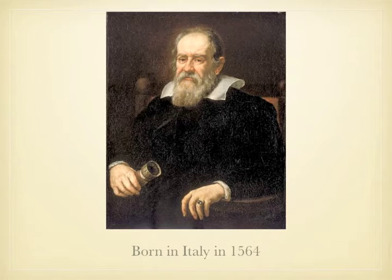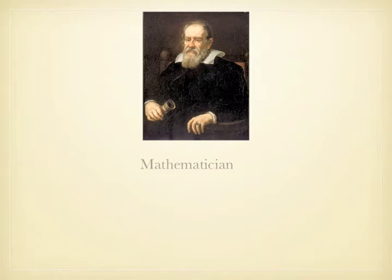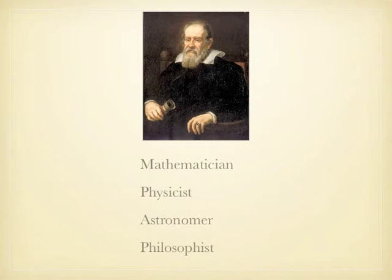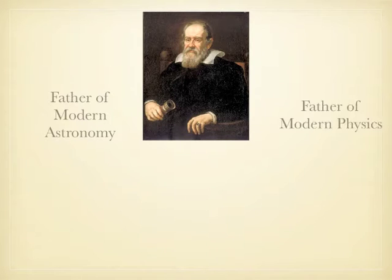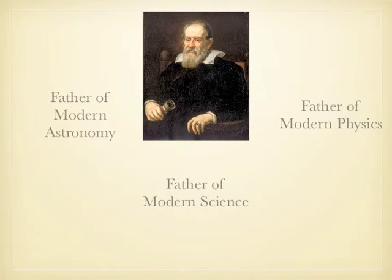Galileo Galilei, born in Italy in 1564, was a mathematician, a physicist, an astronomer and a philosopher. He was given many titles like father of modern astronomy, the father of modern physics, or just the father of modern science. His method of careful observation and experimentation contributed to several groundbreaking discoveries of his time and propelled the widely adopted scientific method.